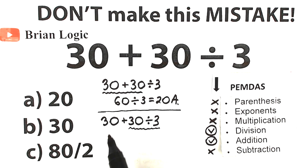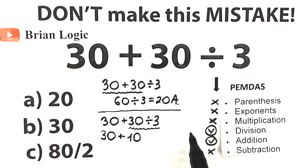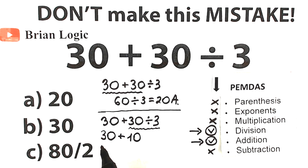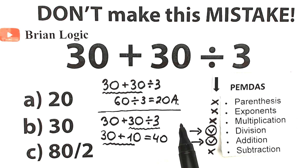So we have 30 plus, and right here, 30 divided by 3 equals 10. Now the last step: we completed this division step. The last step is the addition step — 30 plus 10. You don't even need a calculator because this is very simple addition: 30 plus 10 equals 40.